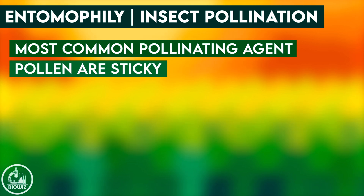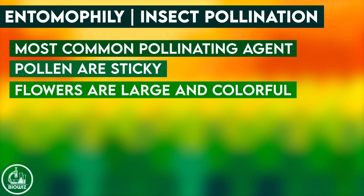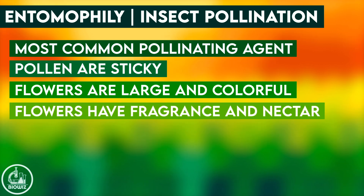The pollen are surrounded by a sticky substance to help it attach to the insect's body. In such plants, the flowers are brightly colored, fragrant, and either large in size or grouped into inflorescence.